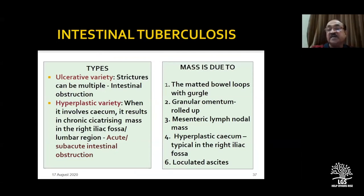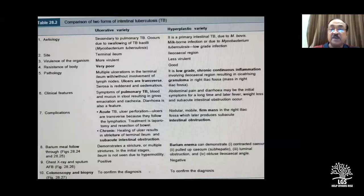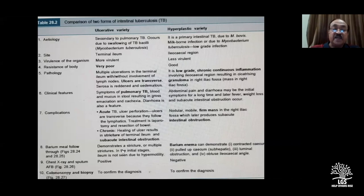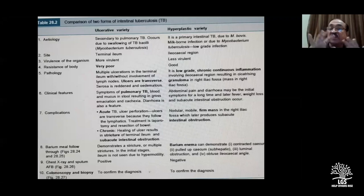What is the mass in abdominal tuberculosis due to? Tympanitic gurgle means matted loops; granular omentum is more commonly seen in children; mesenteric nodal mass; hyperplastic cecum typically in the right iliac fossa; or loculated ascites. These are the important differential diagnoses when you get a mass in the abdomen.